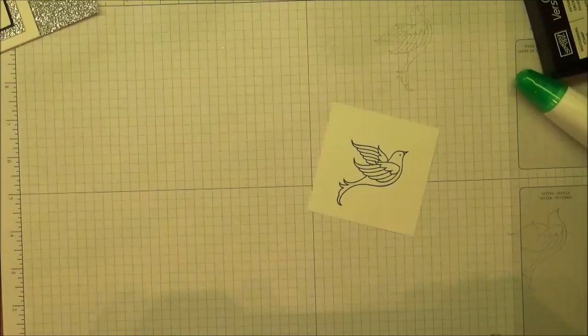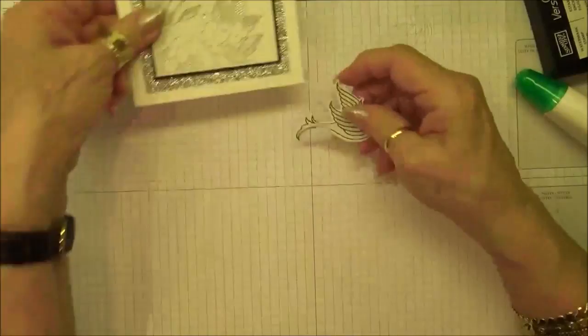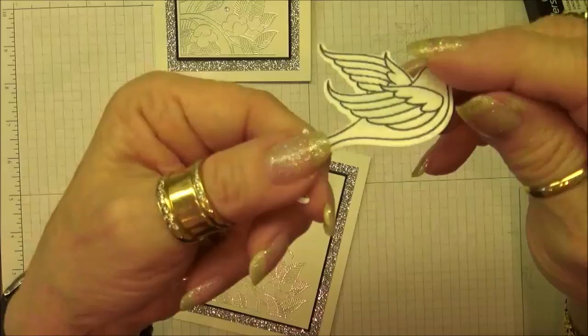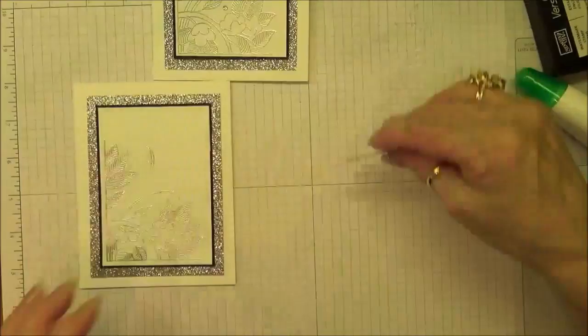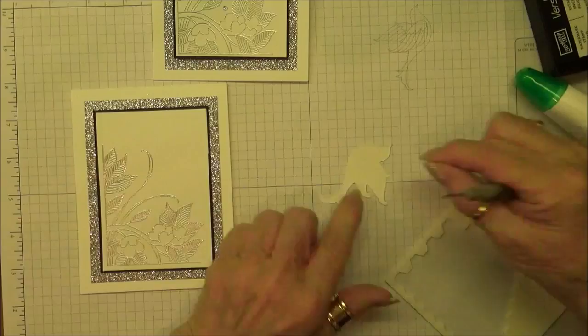Okay, so now what I've done is I ran this through the Big Shot and I cut out my dove. And you know me, Wink of Stella to death practically. How shiny can we get this little dove? So I've got Wink of Stella all over it and then I'm going to put on some dimensionals.